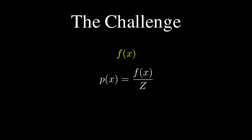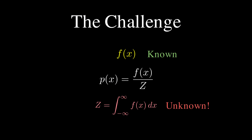You have this probability distribution p(x) that equals f(x) divided by z, where f(x) is the function you can actually compute. You know its shape and can evaluate it at any point, but z — this normalizing constant — requires computing an integral from negative infinity to infinity of f(x) dx. For most real-world distributions, this integral is either impossible to solve analytically or computationally expensive beyond reason, which happens constantly in Bayesian statistics and physics simulations.